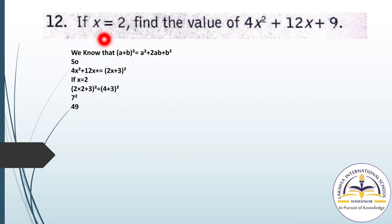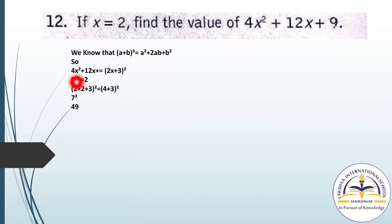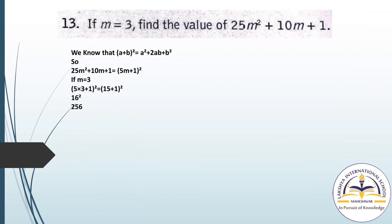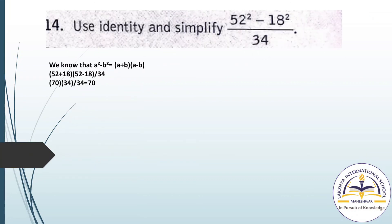Question number 12: if X equals 2, find the value of 4X square plus 12X plus 9. Recognize this as (2X + 3) whole square. Substituting X equals 2: 2 into 2 gives 4, so (4 + 3) whole square equals 7 square equals 49.